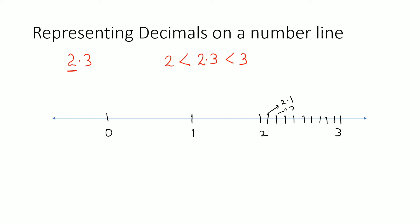Suppose I want to show 1.4. So 1.4 would lie between 1 and 2. Between 1 and 2, divide into 10 equal parts: 1, 2, 3, 4, 5, 6, 7, 8, 9, 10. So this is 1.1, 1.2, 1.3, and here it's 1.4.